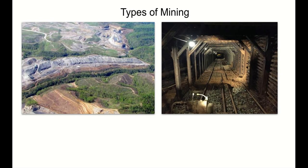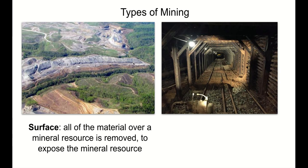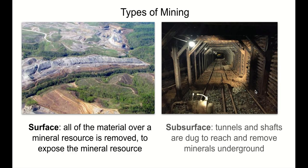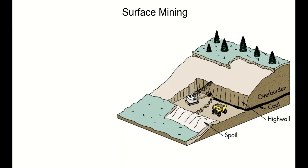How do we get those metals and other resources out of the earth? Mining. We've got two different types: surface mining, where all of the material over a mineral resource is removed to expose it below, and subsurface mining, where tunnels and shafts are dug to reach and remove minerals underground. You can see a coal mine here — this is a subsurface coal mine, one of our most common subsurface mining types.